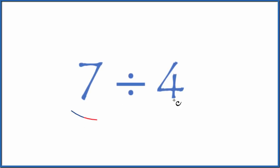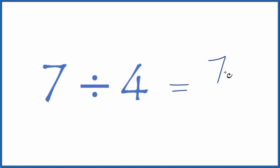If you need to divide 7 by 4, here's how you do it. Let's think of 7 divided by 4 as a fraction first. That's just 7 fourths. So 7 divided by 4, that's equal to the fraction 7 over 4.